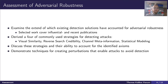Our work assesses existing work with regards to adversarial robustness. We have selected work covering both influential and recent publications and derive four common strategies used for detecting phishing attacks: visual similarity, reverse search credibility, channel meta information, and statistical modeling. We wish to discuss these strategies and their ability to account for the axioms we mentioned, because if they are incapable of accounting for these, it could signal a discrepancy between their understanding of phishing and what phishing actually is.